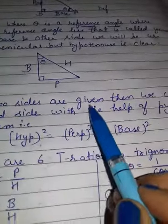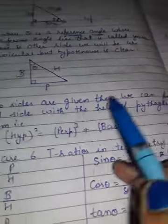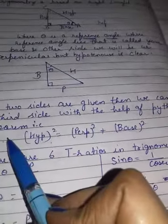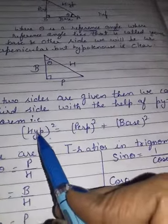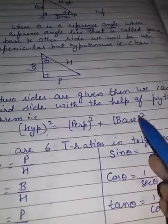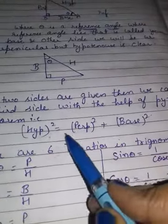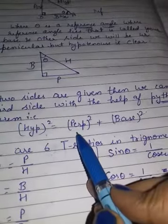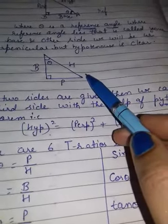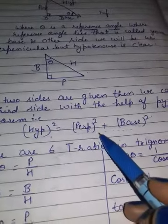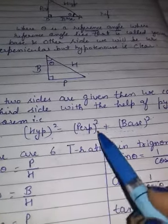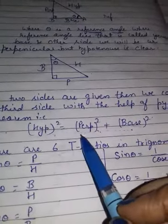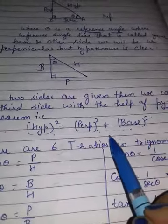If two sides are given, then we can find the third side with the help of Pythagoras theorem — you know this concept already. Hypotenuse squared equals perpendicular squared plus base squared. This is Pythagoras theorem. If any two sides of a right angle triangle are given to you, with the help of this theorem you can find the other side. Any one side can be missing — you have to find the third side using this theorem. This is very important.